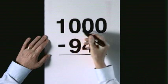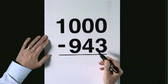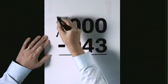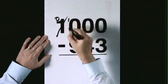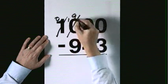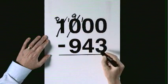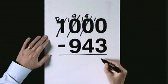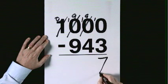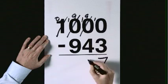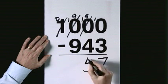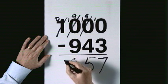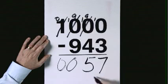1,000 subtract 943. Exchange. Exchange. Exchange. 10 take 3 is 7. 9 take 4 is 5. 9 take 9 is 0. 0. The answer is 57.